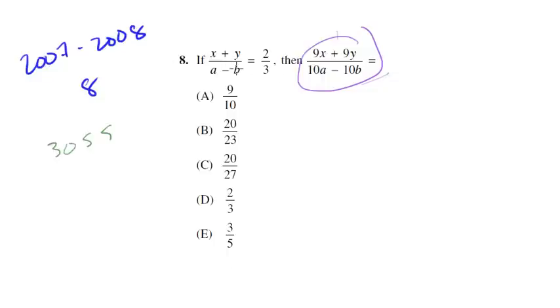So let's see. We know that x plus y equals 2, and we know that a minus b equals 3. Now, I want to get this to look like (9x+9y)/(10a-10b). Let's think about this.